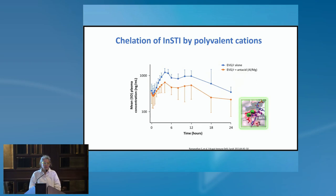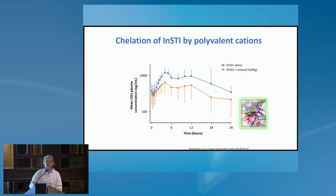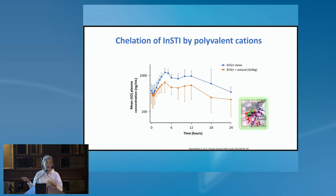This graph shows the concentrations of elvitegravir when given alone and when given with antacids containing high doses of cations like aluminum and magnesium. The antacid is the perpetrator of the interaction, at the level of absorption — it binds to and chelates the integrase inhibitor so it's not absorbed. A patient who takes Stribild or Genvoya together with antacids will not have enough elvitegravir in systemic circulation to achieve an undetectable viral load and will fail treatment.